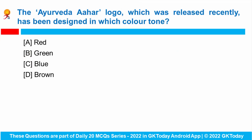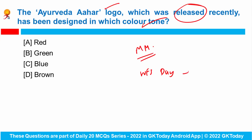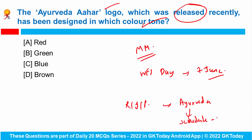Next question: The Ayurveda Ahar logo which was released recently has been designed in which colour tone? Union Health Minister Mansukh Mandviya launched the Ayurveda Ahar logo on the occasion of World Food Safety Day, which is observed on 7th June. Ayurveda Ahar is a type of food prepared with recipes, ingredients, and processes described in books of Ayurveda, and it is listed in Schedule A of FSSAI regulations. The design is based on a green-coloured logo featuring initial letters of Ayurveda and Ahar in Devanagari and English script.